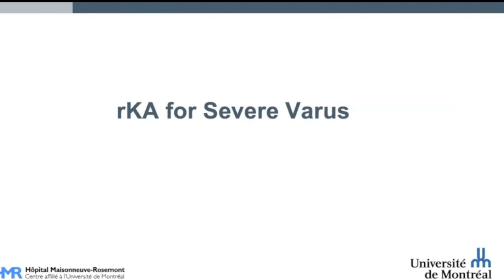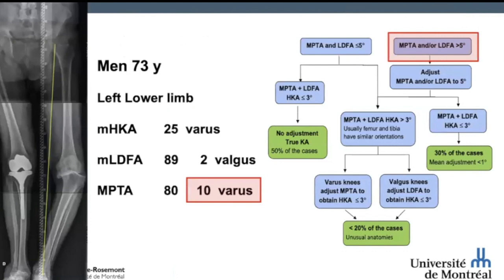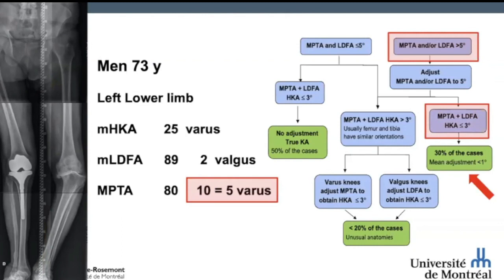Now let's see a case of RKA for a severe varus patient. This is a man of 73 years old with a left lower limb in severe varus of 25 degrees with bone loss on the tibial side and probably on the femoral side. The LDFA is 2 degree valgus, so it falls within our boundaries, but the MPTA is 10 degree varus — a severe deformity. According to our algorithm, we need to adjust the MPTA down to a maximum of 5 degree varus. The combination of 5 degree varus plus 2 degree valgus will lead to an HKA of 3 degrees. We are making minor adjustments to produce a post-op HKA within the safety zone of plus or minus 3 degrees.